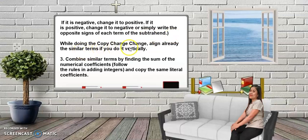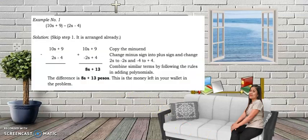While doing the Copy Change Change, align the similar terms. Recall that similar terms have the same literal coefficients and the same exponents. Then combine similar terms by finding the sum of the numerical coefficients, following the rules in adding integers, and copy the same literal coefficients.